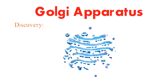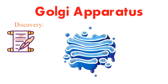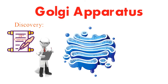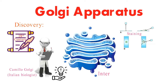The story of the Golgi apparatus begins in the late 19th century, when an Italian biologist named Camillo Golgi made a groundbreaking discovery. In 1898, Golgi used a staining technique to visualize what he termed the internal reticular apparatus.